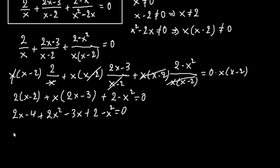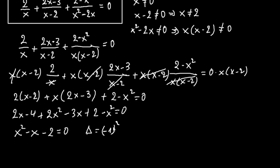Now we solve x squared minus x minus 2 equals 0 using the quadratic formula. The discriminant is b squared minus 4ac, where a equals 1, b equals minus 1, and c equals minus 2. This gives us 1 plus 8, so the discriminant equals 9.